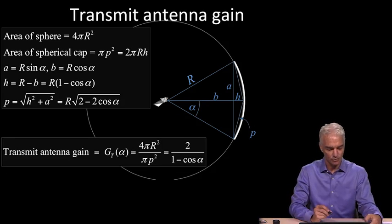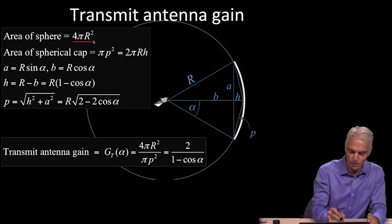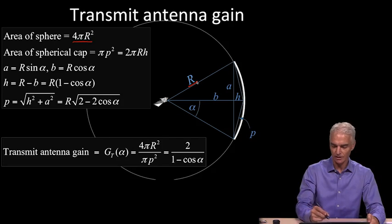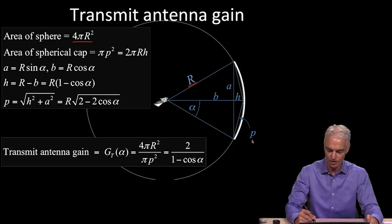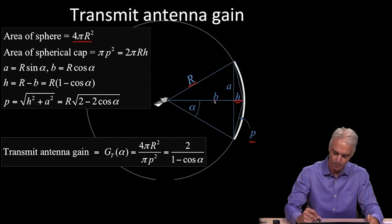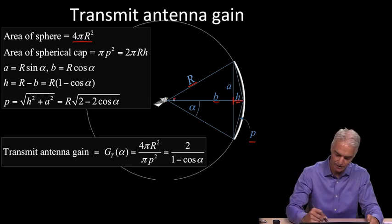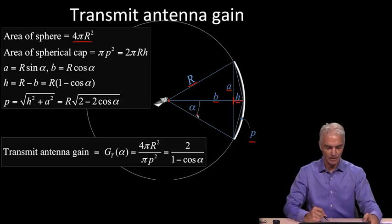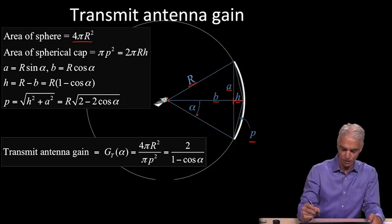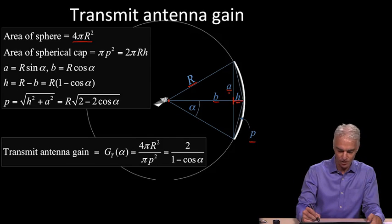We start with the area of the sphere, 4πr², where r is the radius of the sphere. That would be the distance from the satellite to the edge of where that spot touches the Earth. The area of the spherical cap, we're going to write in terms of this distance p. Let's go through what we have here. We have this distance p, which is the slant angle from the middle here to the edge of that cap. H is that distance there. B is this distance here between that line and the satellite.